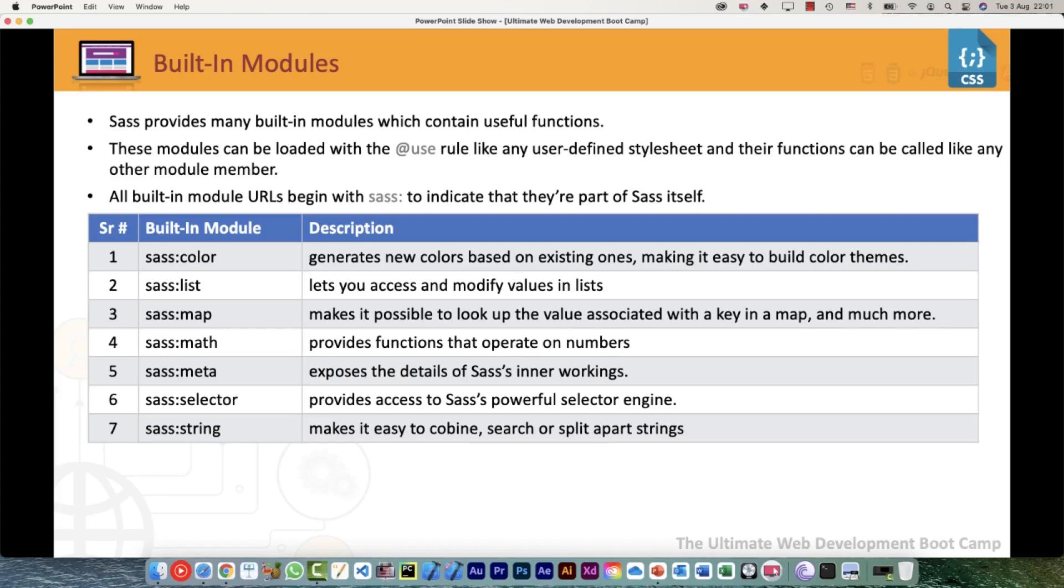All the built-in module URLs begin with sass: followed by the module name. These are the ones I've given in the table: sass:color generates new colors based on existing ones, making it easy to build color themes. sass:list lets you access and modify values in lists. sass:map makes it possible to look up the value associated with a key in a map and much more. sass:math provides functions that operate on numbers. sass:meta exposes the details of Sass's inner workings.